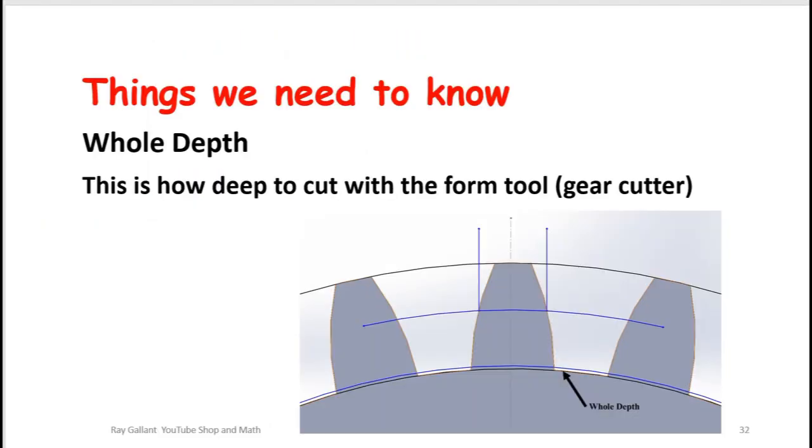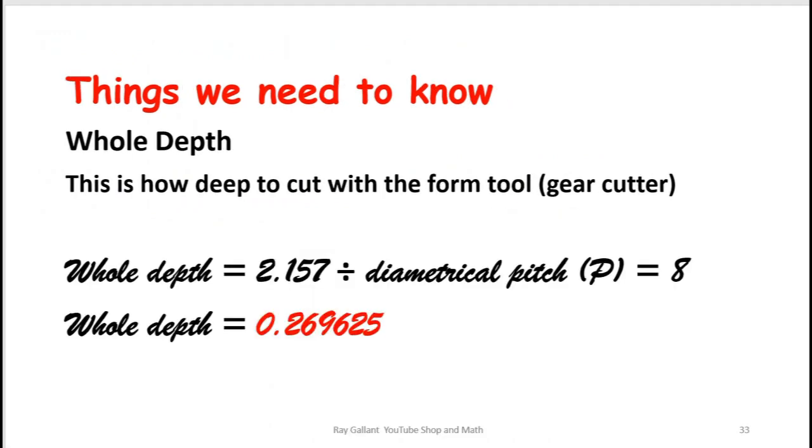How deep do we need to machine which is going to be our hole depth? 2.157 divided by a pitch in our case is going to be 8. Therefore our hole depth for our particular gear is going to be 0.2696.